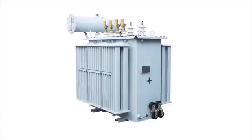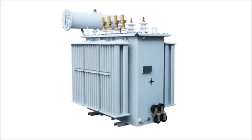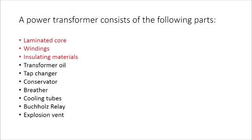A transformer is an electrical device that transfers electrical energy from one circuit to another by electromagnetic induction. It is used to step up or step down AC voltages. A transformer consists of a laminated core, windings, insulating materials, transformer oil, tap changer, oil conservator, breather, cooling tubes, Buchholz relay, and explosion vent. Of these, the laminated soft iron core, windings, and insulating material are the primary parts present in all transformers, whereas the rest are found only in transformers with a capacity of more than 50 kVA.